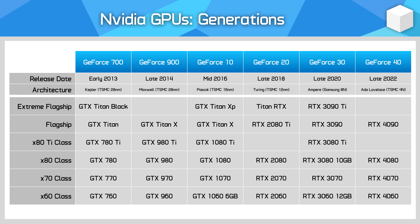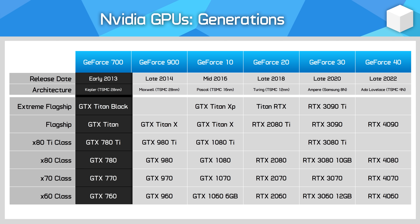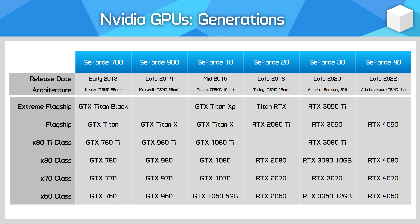I've gone back as far as the GeForce 700 series, which was first released more than 11 years ago in 2013, because this is the first generation that NVIDIA produced single-GPU models above the 80-class. So this is the start of what I'd describe as the current lineup structure. Prior to that, the top models tended to be the 80-class GPU, with the occasional dual-GPU model thrown in.